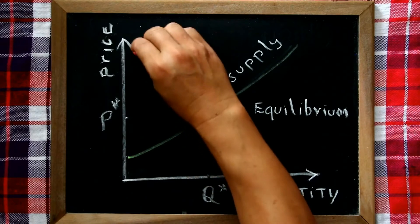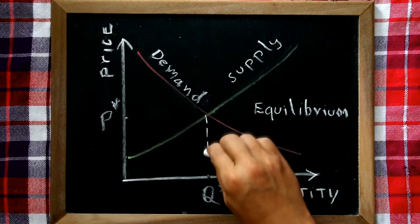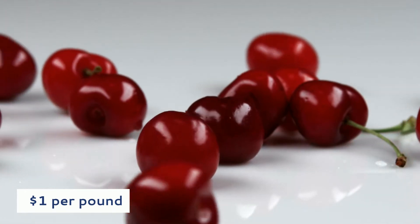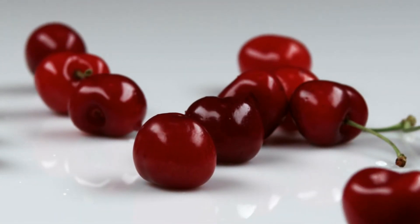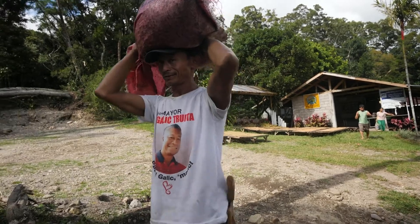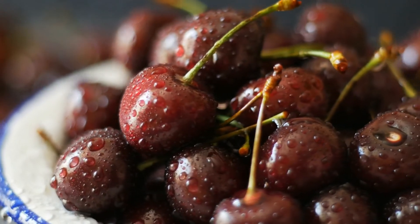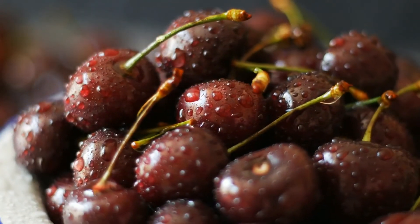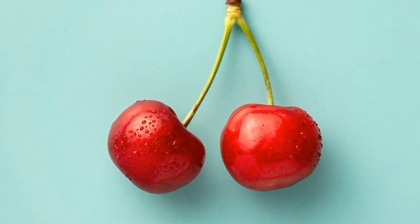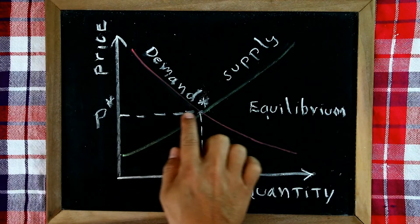A market for a particular commodity is in equilibrium if, at the current prices of all commodities, the quantity of the commodity demanded by potential buyers equals the quantity supplied by potential sellers. For example, suppose the current market price of cherries is one dollar per pound. If all cherry farmers together are willing to sell a total of 500 pounds of cherries per week at one dollar per pound, and all potential customers together are willing to buy 500 pounds per week at one dollar per pound, then the market for cherries is in equilibrium because neither shortages nor surpluses exist.